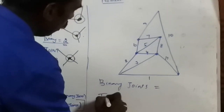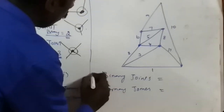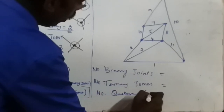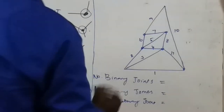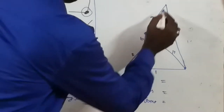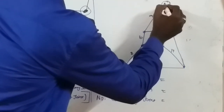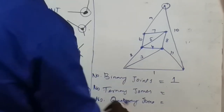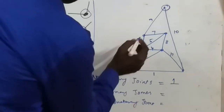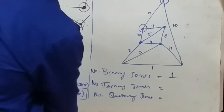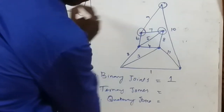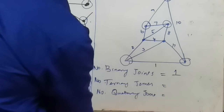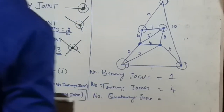Next, the number of ternary joints - three links in the connection. Looking at the diagram: joints at nodes 6-7-9 form one ternary joint, giving ternary joint one, two, three, and four - so totally four ternary joints. Next, the number of quaternary joints.